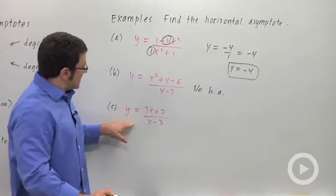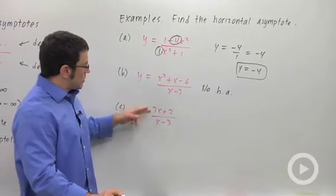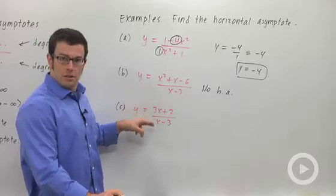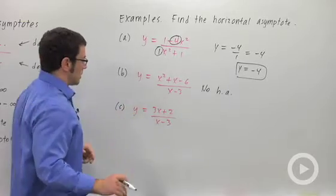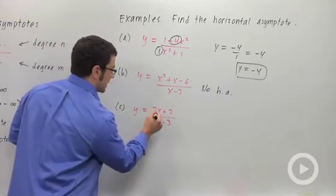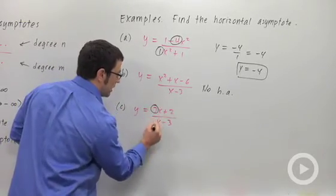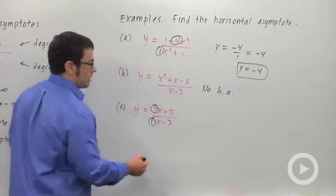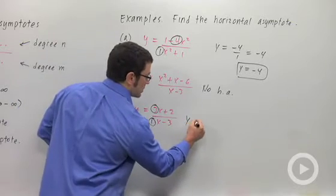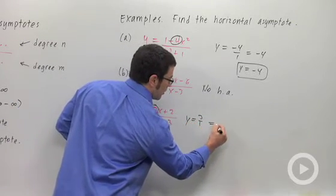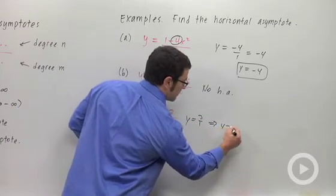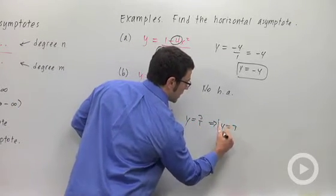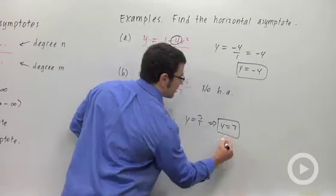And in this instance, the degrees are both 1 — they're the same. So we look at the leading coefficients again: 3 and 1. So y equals 3 over 1, which is y equals 3. That's our horizontal asymptote.